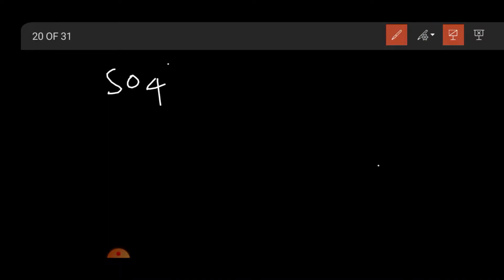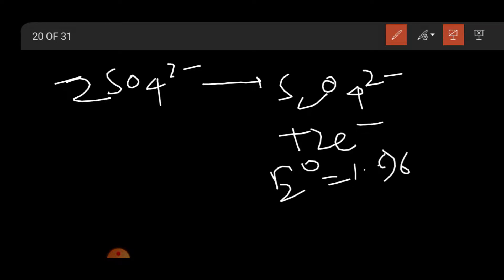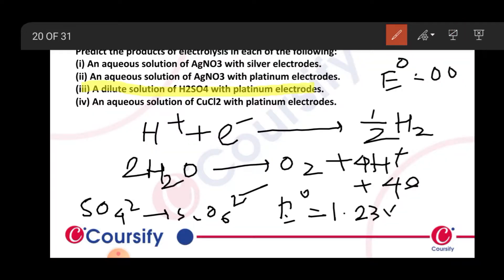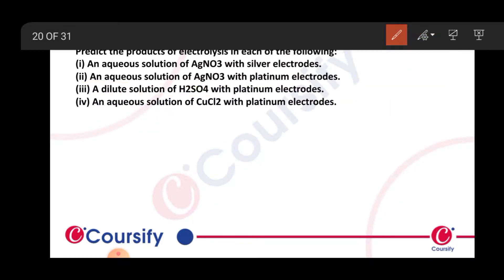SO4²- → S2O8²- has an E0 value of 1.96 volts. For dilute sulfuric acid, reaction one is preferred to produce oxygen gas. But for concentrated sulfuric acid, this S2O8²- reaction is favorable. For dilute sulfuric acid, oxygen liberation is preferable.